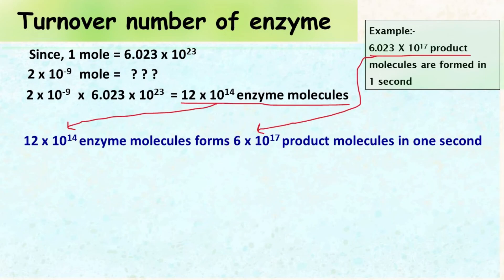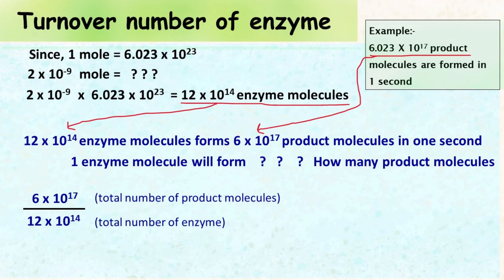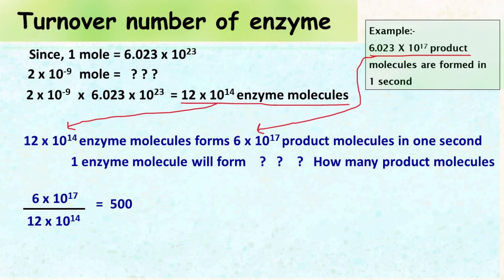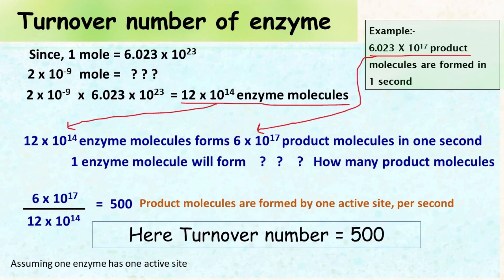So 12×10¹⁴ enzyme molecules are forming 6×10¹⁷ product molecules per second. The turnover number equals 6×10¹⁷ divided by 12×10¹⁴, which gives 500. So 500 product molecules are formed by one active site per second — and this is the turnover number.